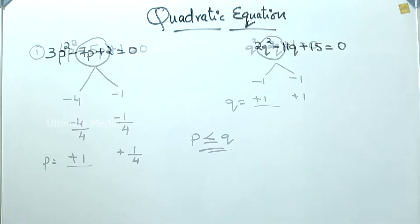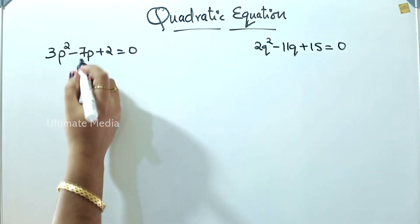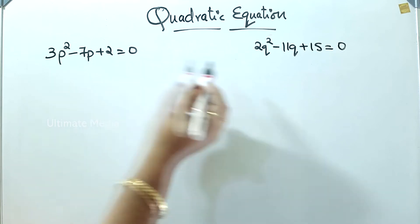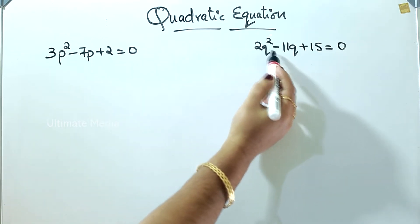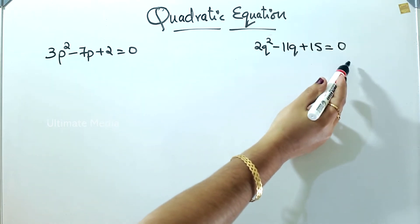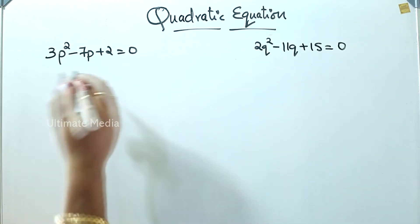Now I will write the next question. 3p squared minus 7p plus 2 is equal to 0. 2q squared minus 11q plus 15 is equal to 0.